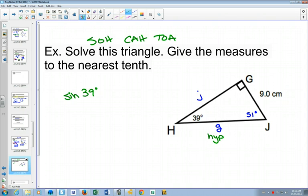Sine of 39. Opposite side is 9. And the hypotenuse, which we don't know, is little G. So multiply both sides by G. Divide both sides by sine of 39.